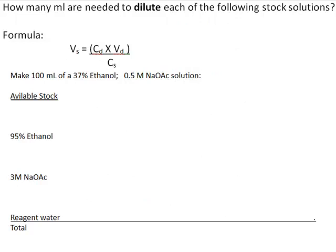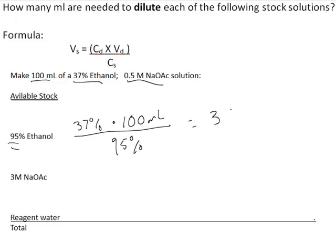If we're mixing up our working reagents using percents, we still use the same formula, and it's very similar to what we did in our last example. In this example, we want 100 milliliters of 37% ethanol and half of a molar of sodium acetate. Starting with our ethanol, we want 37% in a volume of 100 milliliters, and we have already in stock 95% ethanol. Calculate that out, that gives us 38.95 milliliters that we'll need to take of our 95% ethanol.